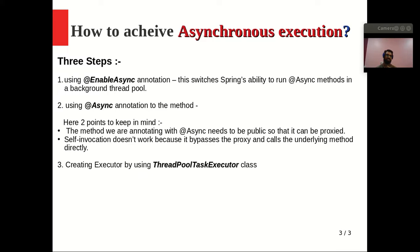There are basically three steps to achieve asynchronous execution in a Spring Boot application. First, you have to add the @EnableAsync annotation. This switches Spring's ability to run @Async methods in a background thread pool. We have to use @EnableAsync in our main class. Second, you have to use the @Async annotation on the method you want to execute separately or in parallel — annotate that method with @Async.